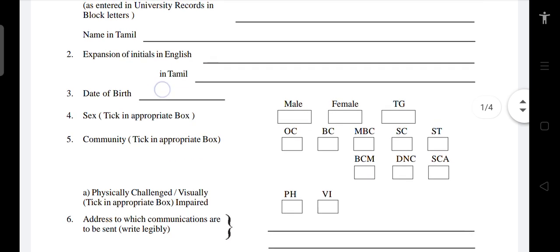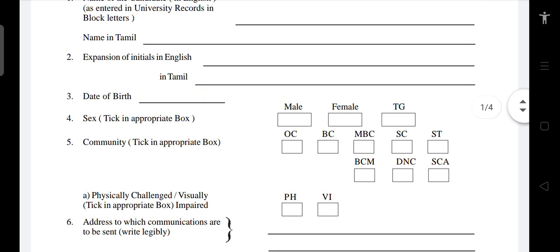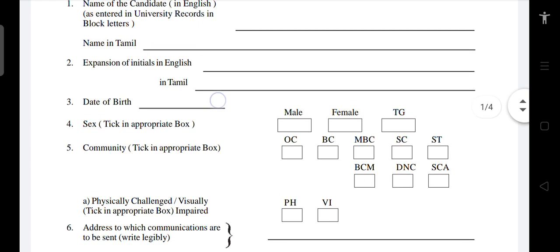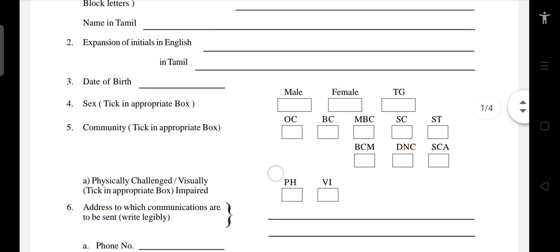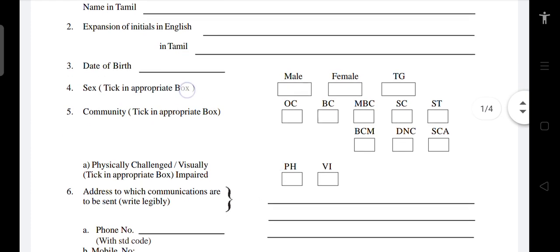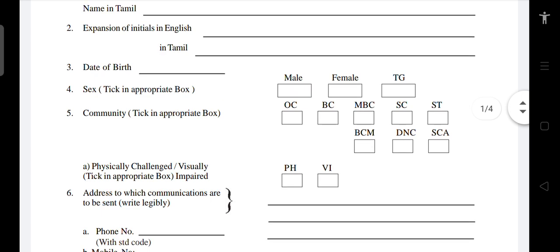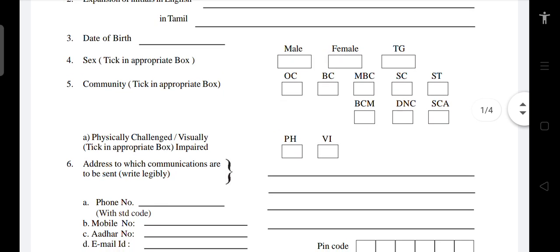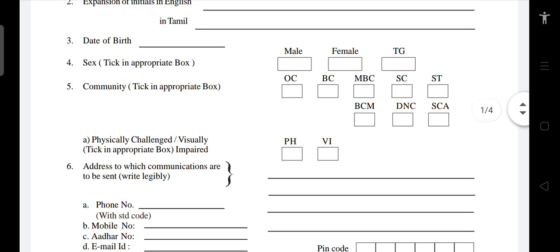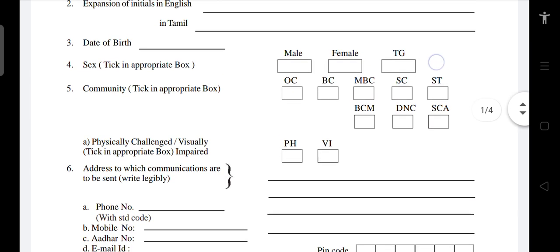If you apply the date of birth, enter the data as it appears on your 10th or 12th TC. Fill in the date of birth accordingly. Then tick the appropriate box — Male, Female, or Transgender (TG).